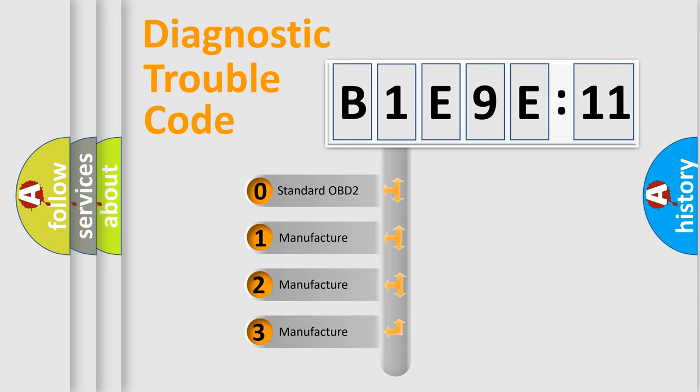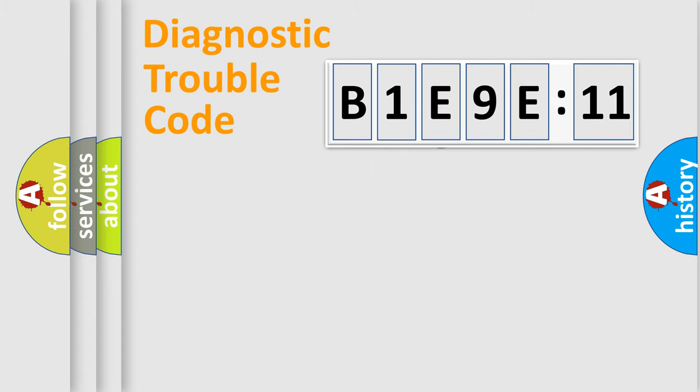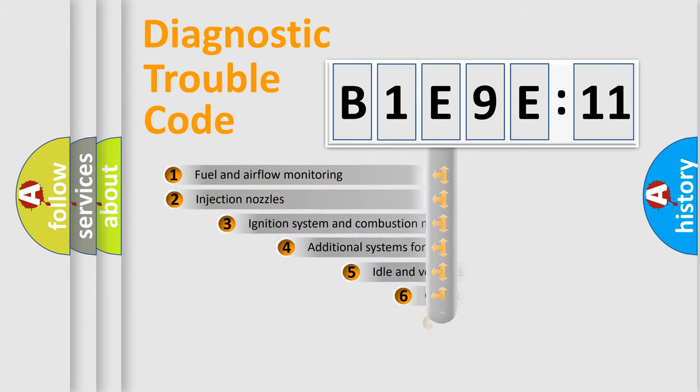If the second character is expressed as zero, it is a standardized error. In the case of numbers 1, 2, or 3, it is a manufacturer-specific expression of the car-specific error.